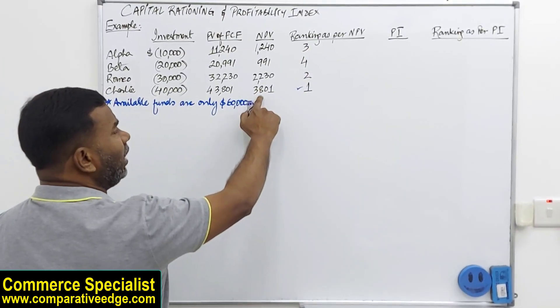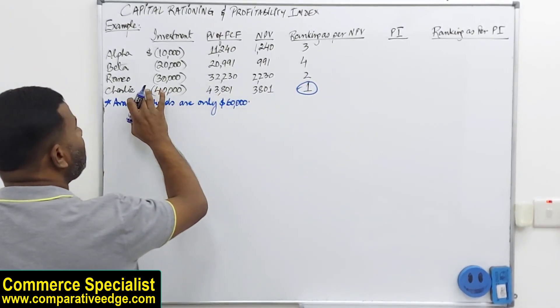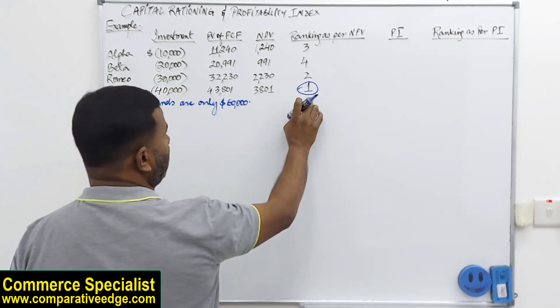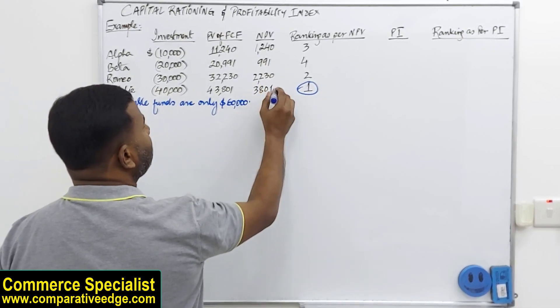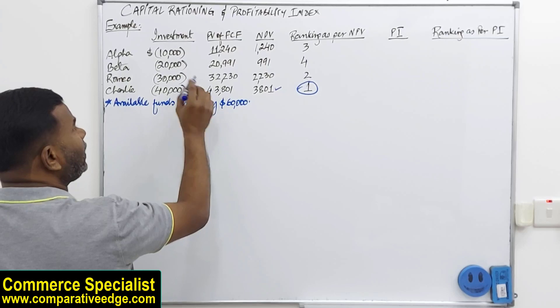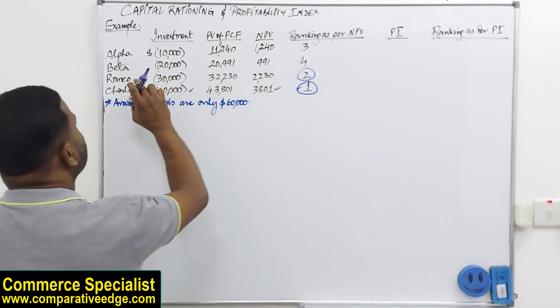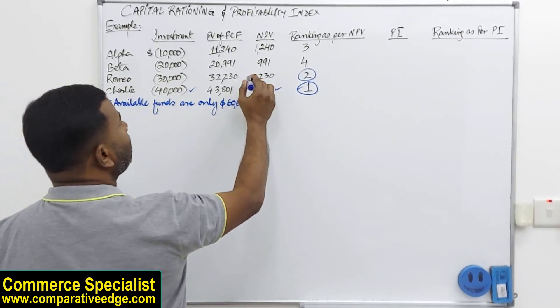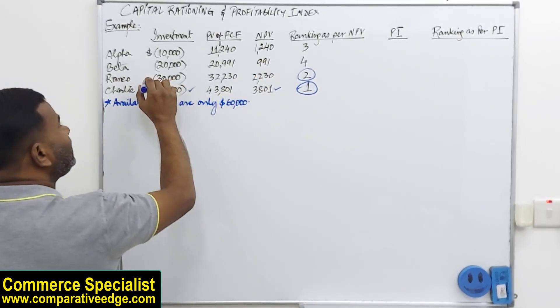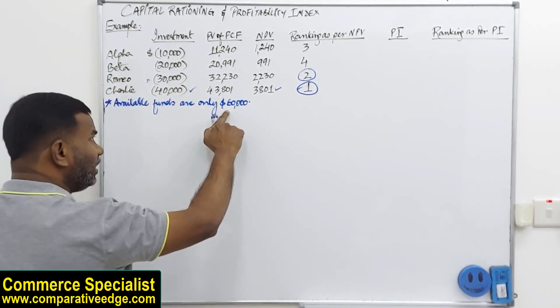So this is the highest NPV. I would like to invest in this. So if I invest in Charlie project, which is my first priority, it gives me an NPV of 3,801. But it requires an investment of 40,000. If I go on my second best option, project Romeo, it gives me an NPV of 2,230 but requires 30,000. Now 40 and 30 is 70. I have only 60,000 left.